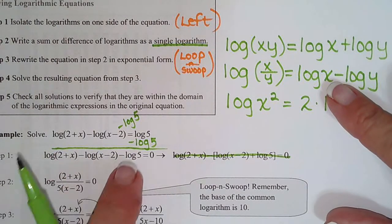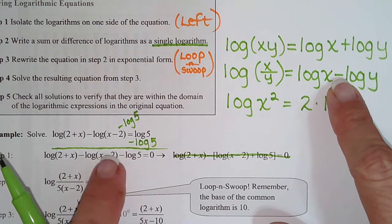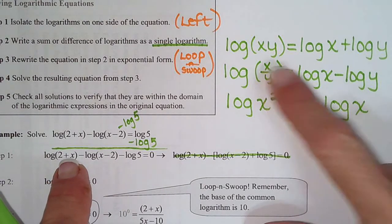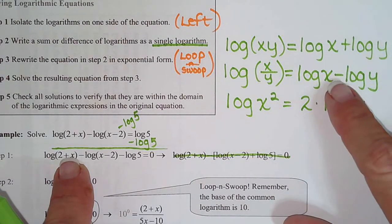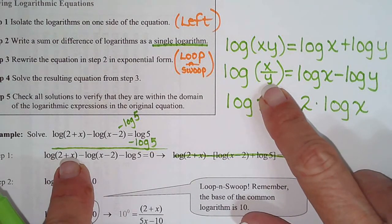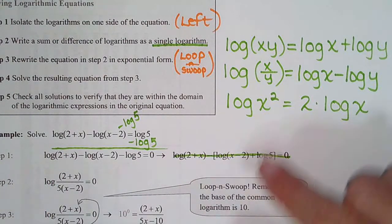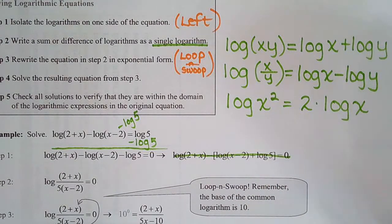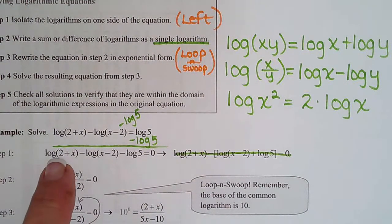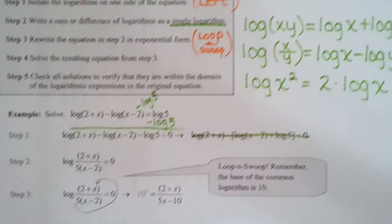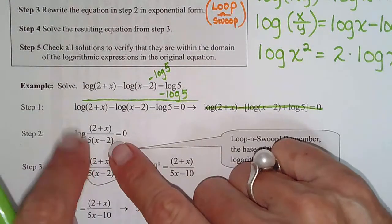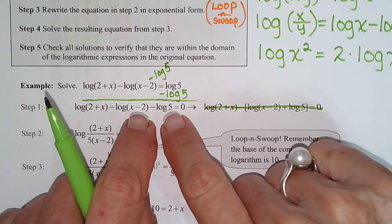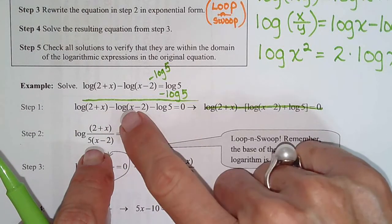We learned that when logs have a subtraction, their arguments go into the denominator. When a log is positive, its argument stays in the numerator. So the positive log's argument is in the numerator, and the negative logs' arguments go in the denominator. That stems from exponent rules — positive exponents stay, negative exponents move to the denominator to become positive. Sister property for logs. To do Step 2 — write as a single logarithm — the log that is positive puts its argument in the numerator, and the two negative logs get multiplied in the denominator: 5 times (x minus 2).